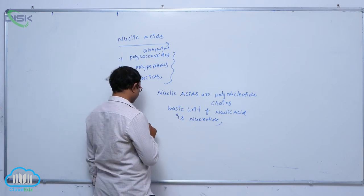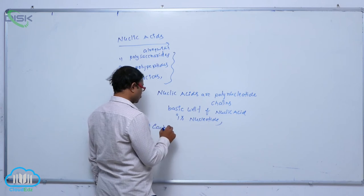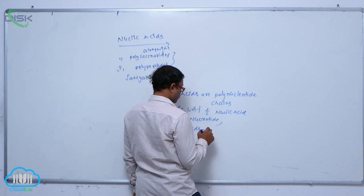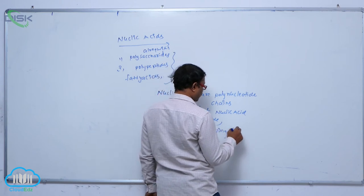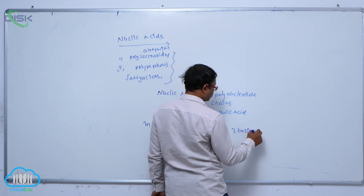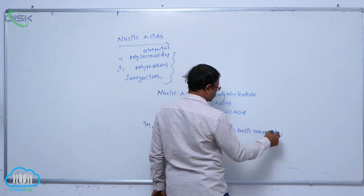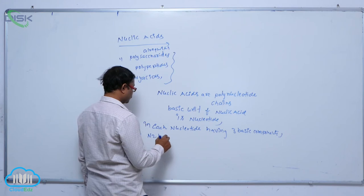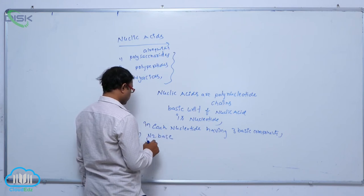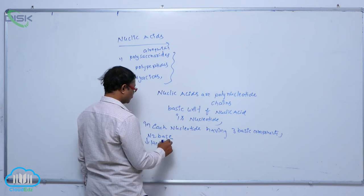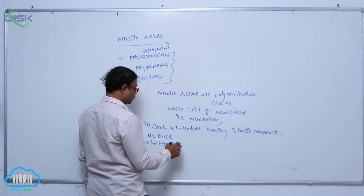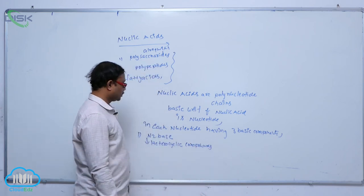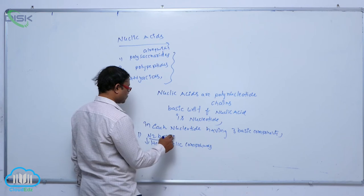In each nucleotide, there are three basic components. The first one is the nitrogen base. These nitrogen bases are heterocyclic compounds.